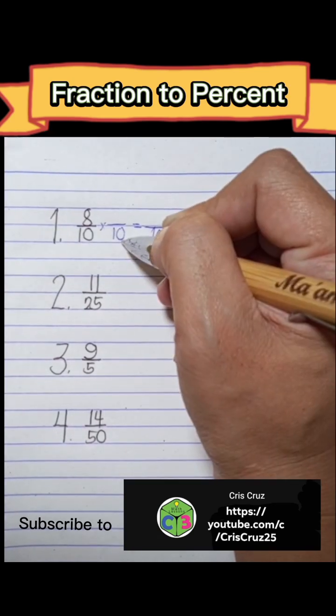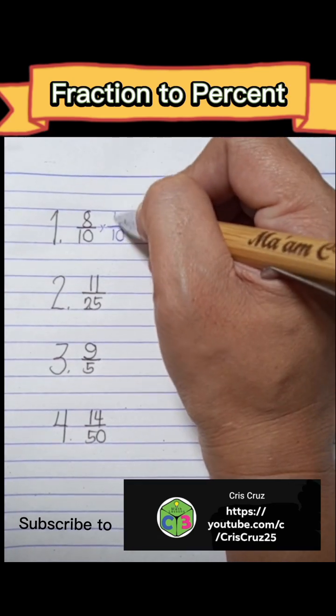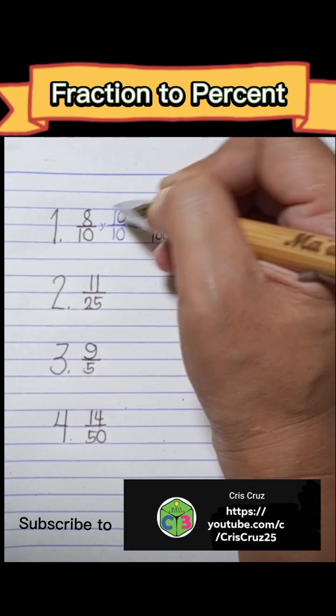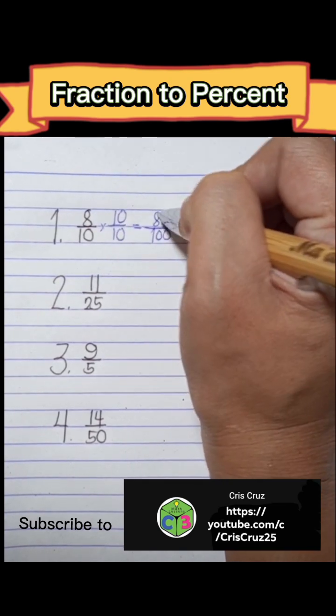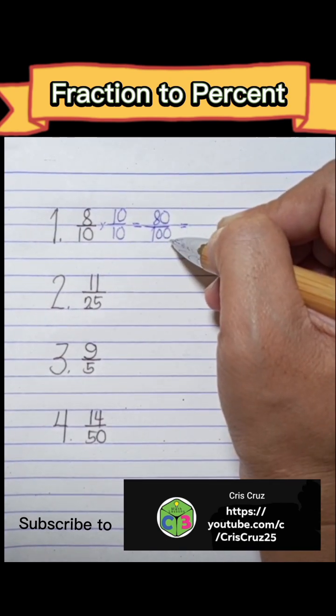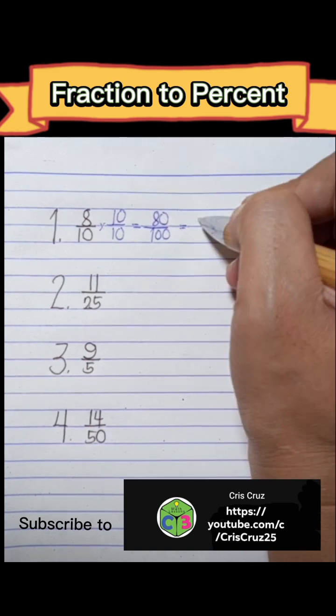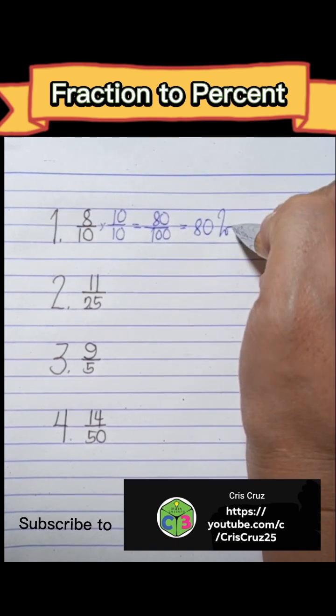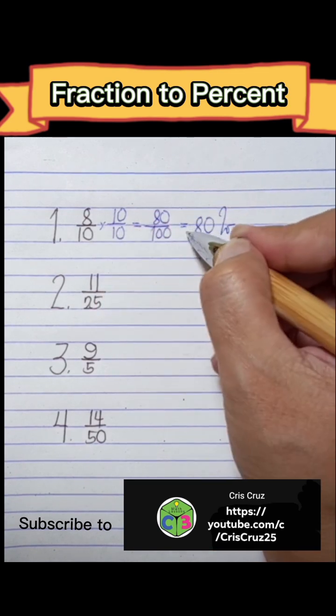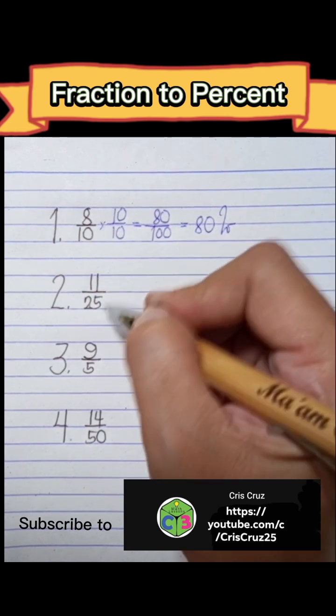If I multiply the denominator by 10, I'm going to multiply the numerator by 10 as well. 8 times 10 equals 80. Now that my denominator is 100, the answer is the numerator, so this is 80%. This means 8 over 10 equals 80%. Number 2: